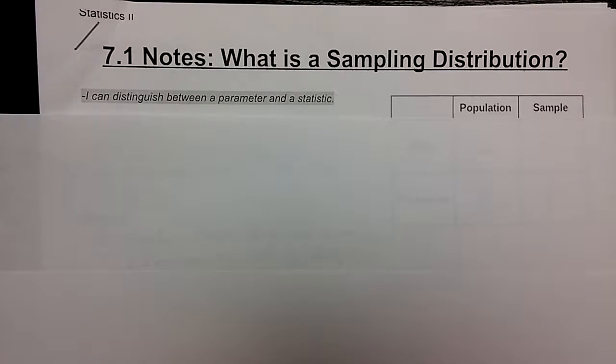In this video, we're going to begin to talk about section 7.1, what is a sampling distribution. We're going to define a sampling distribution, show you what they look like, and how to actually use them to evaluate certain claims made about products, what people say in newspapers, magazines, and so on.